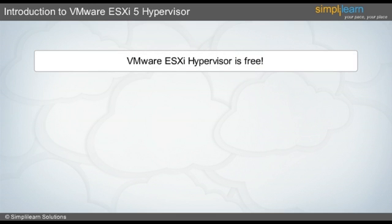Let us start with the free virtualization technology offered by VMware, namely VMware ESXi-5 hypervisor. The other name for this hypervisor is VMware vSphere hypervisor. It is a production-ready hypervisor that allows the virtualization of servers. Built on the world's smallest and most robust architecture, VMware vSphere ESXi sets the industry standard for reliability, performance, and ecosystem support.